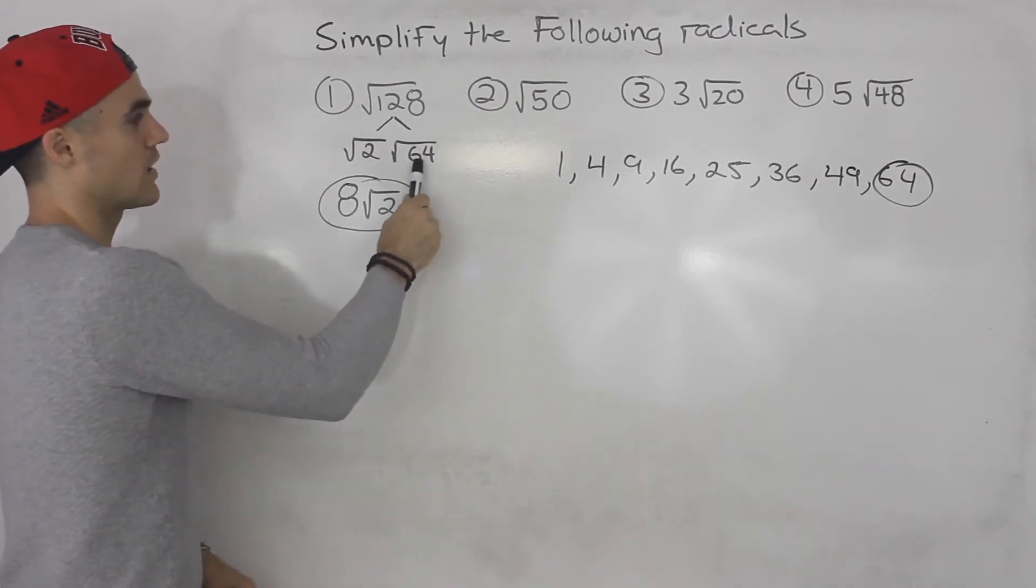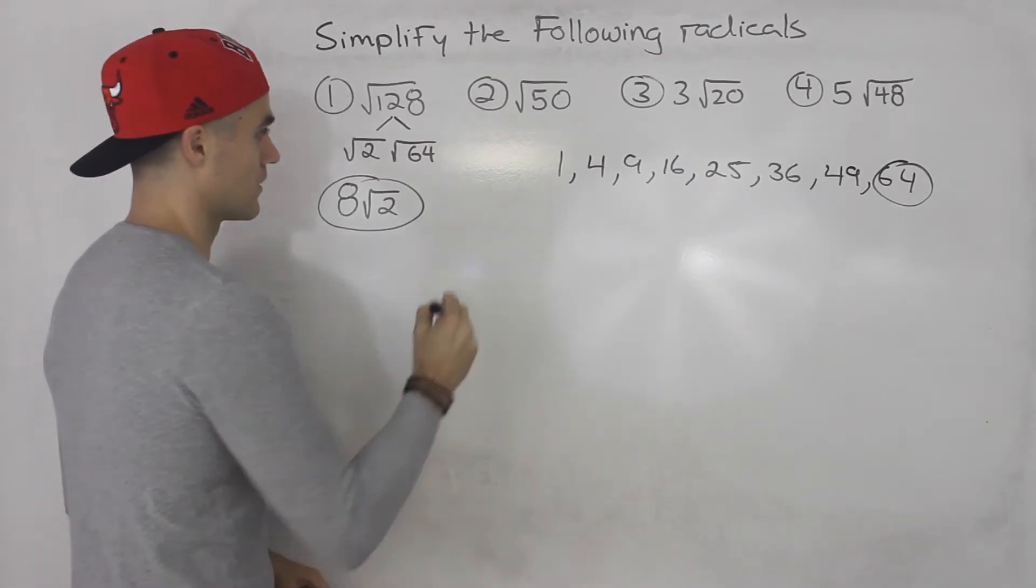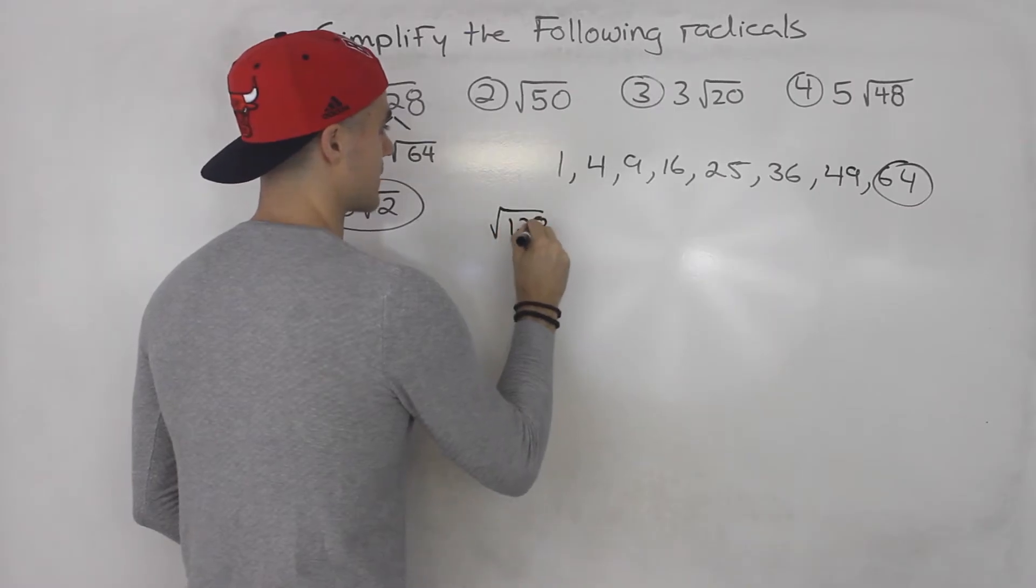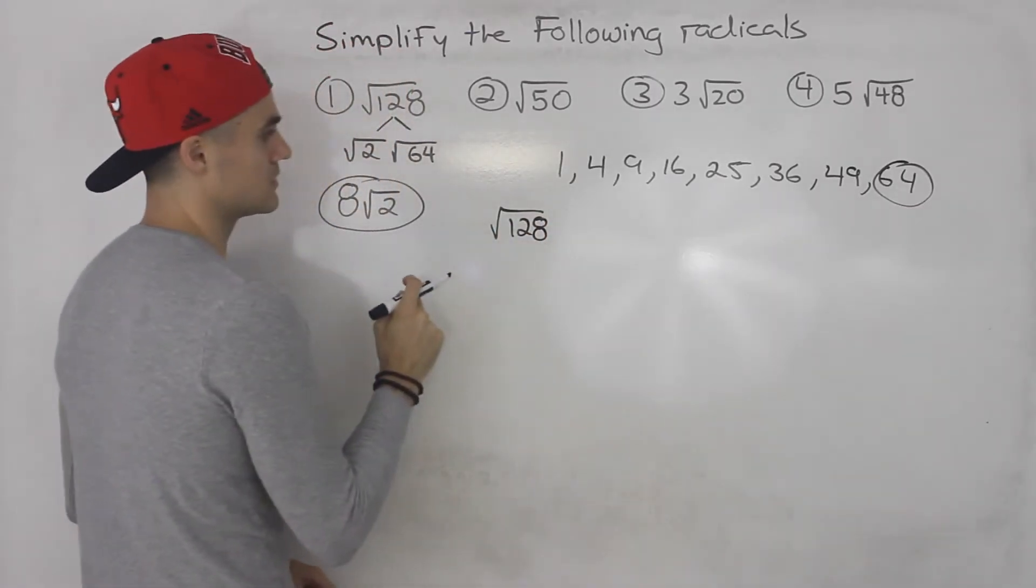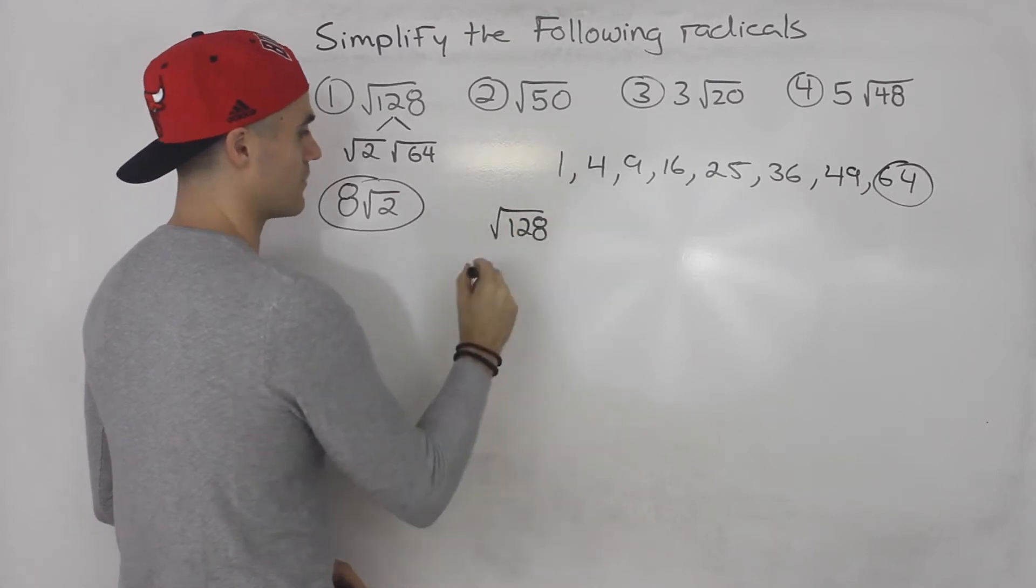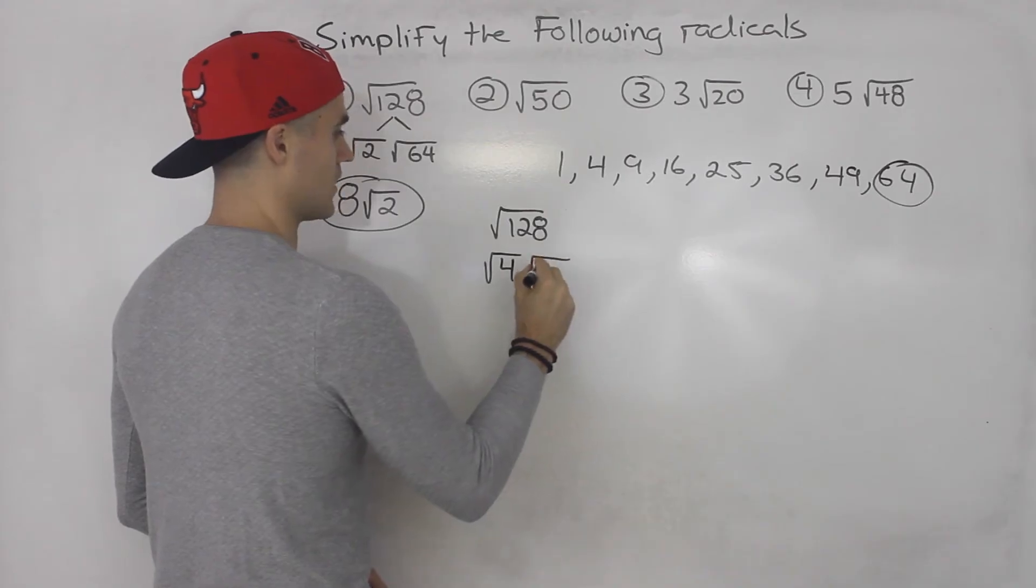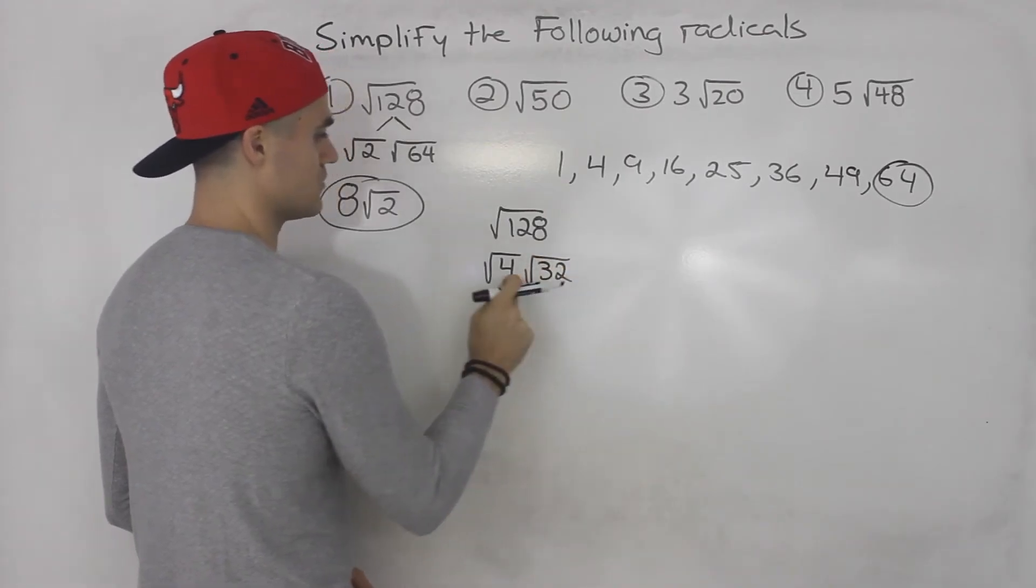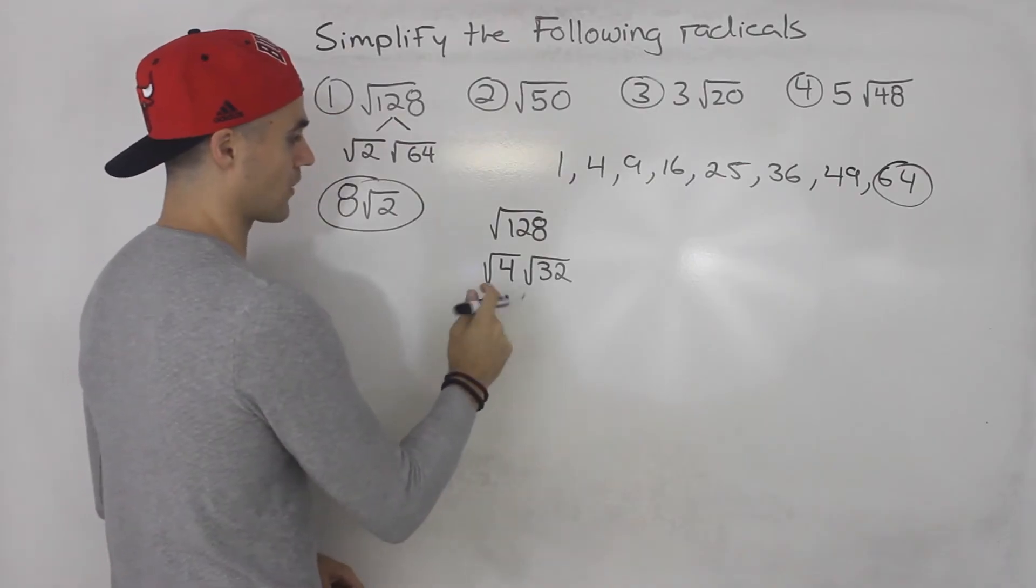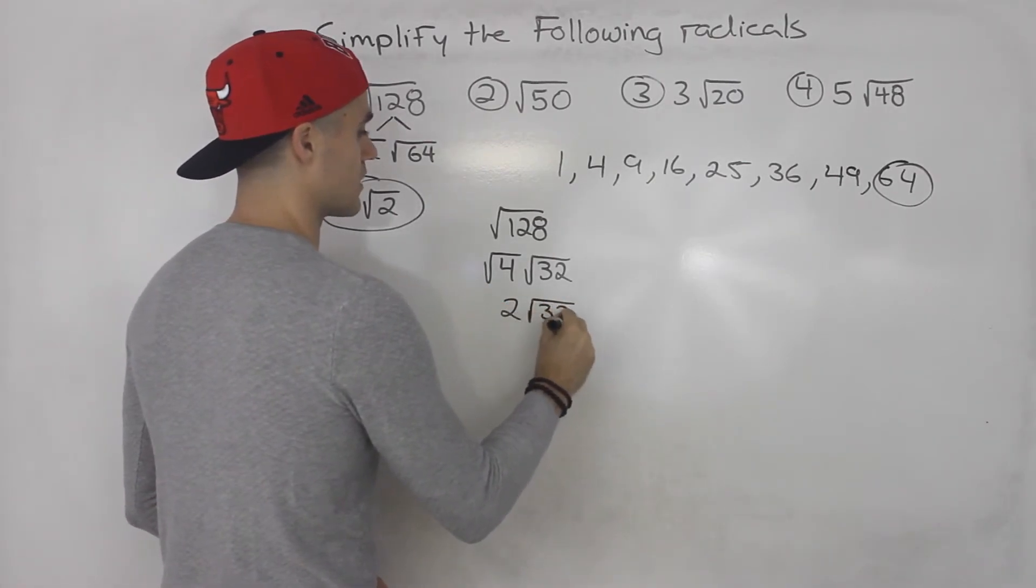Now, what if you didn't know right away that 128 divides into 64? Well, we could have just did this in steps. So what we could do is we know that 128 can divide it by 4. So we could say root 4 times what? Root 32. 4 times 32 gives us 128. And what's the square root of 4? Square root of 4 is 2.